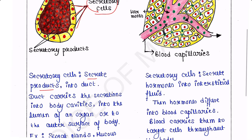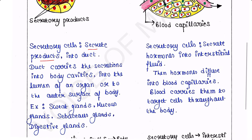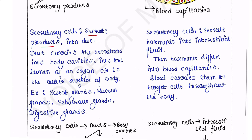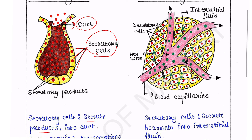Exocrine glands carry secretions to the outer surface of the body. Examples of exocrine glands are sweat glands, mucus glands, sebaceous glands, digestive glands, etc. The secretory cells secret products into the ducts, and from the ducts these products are delivered to either body cavities, the lumen of the organ, or the outer surface of the body. Therefore exocrine glands have ducts.